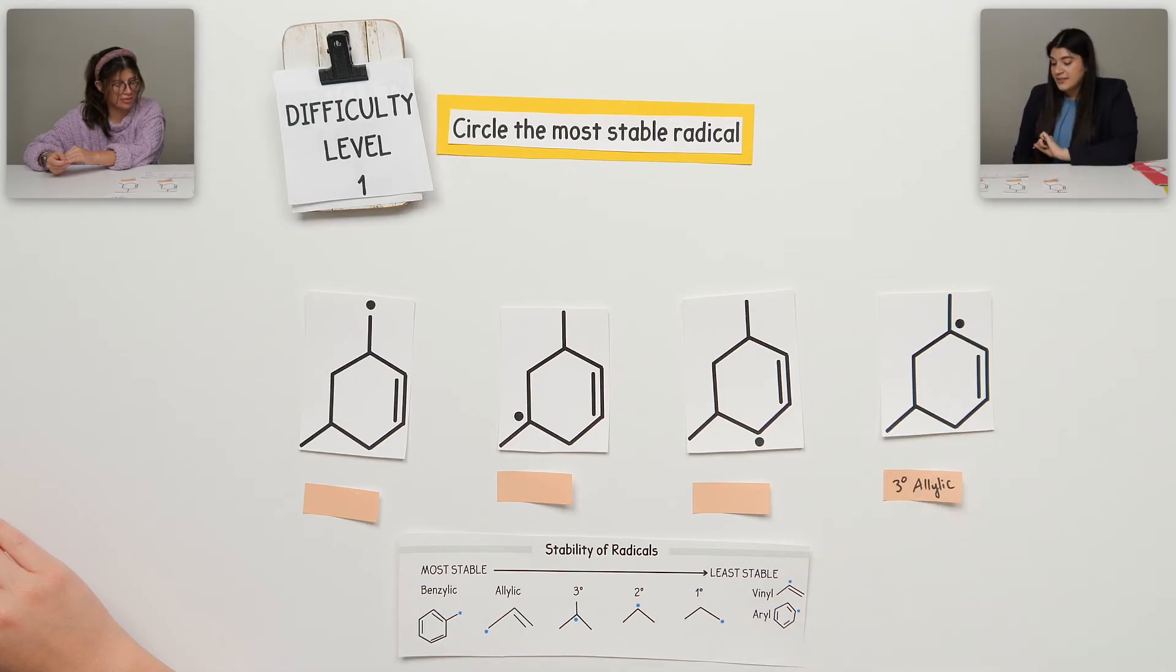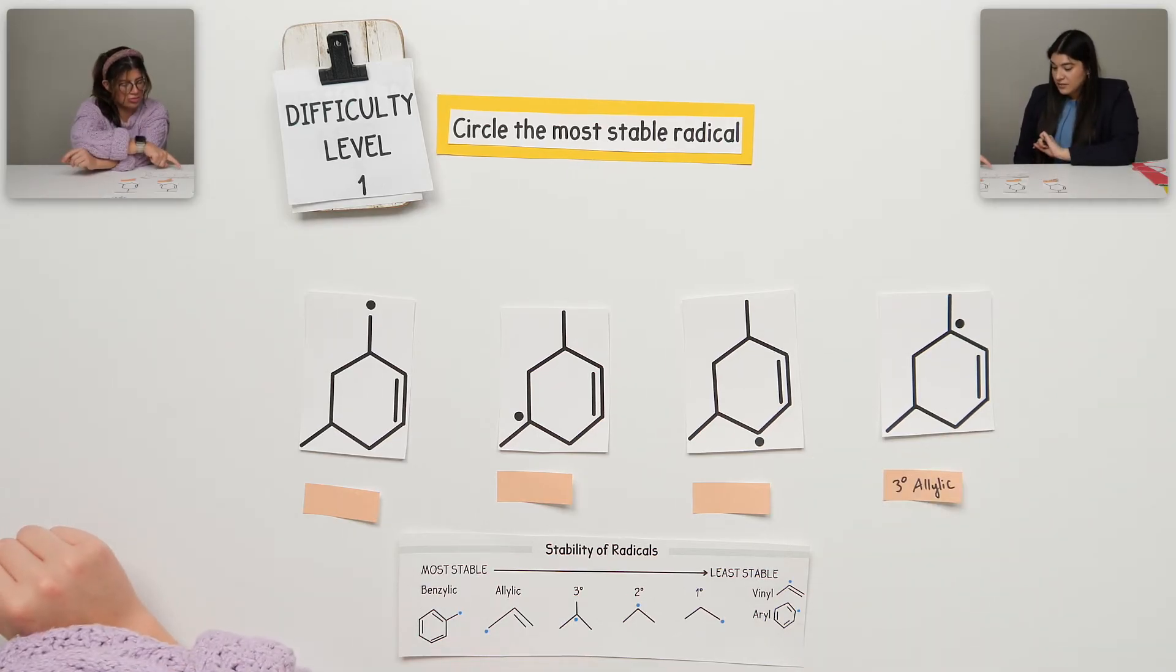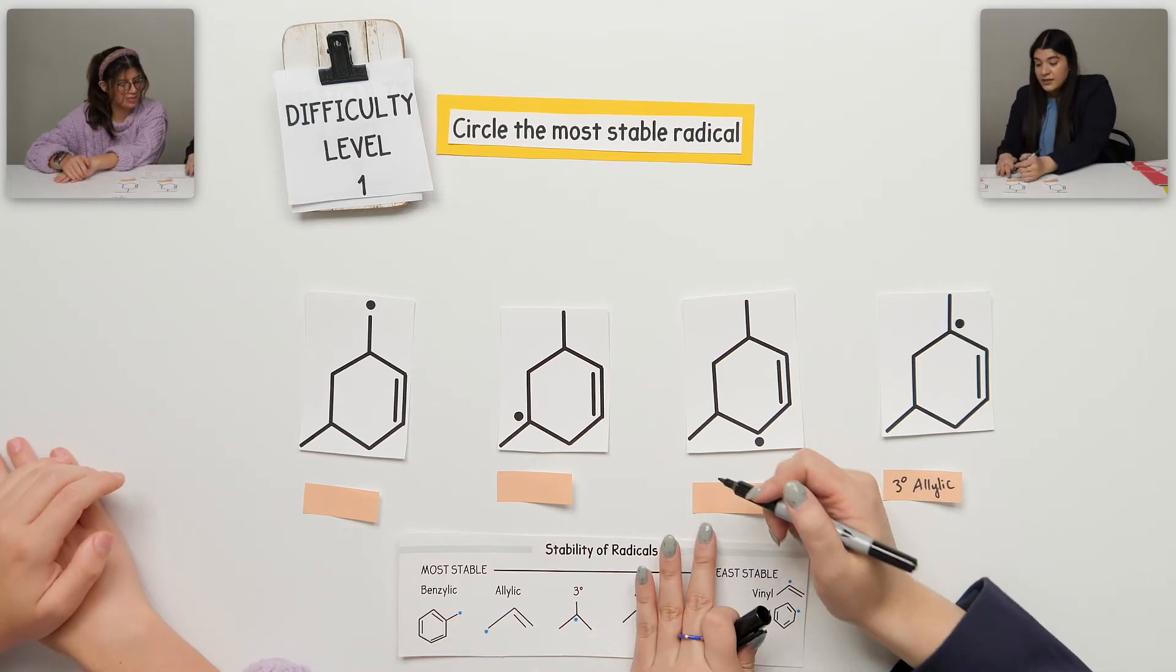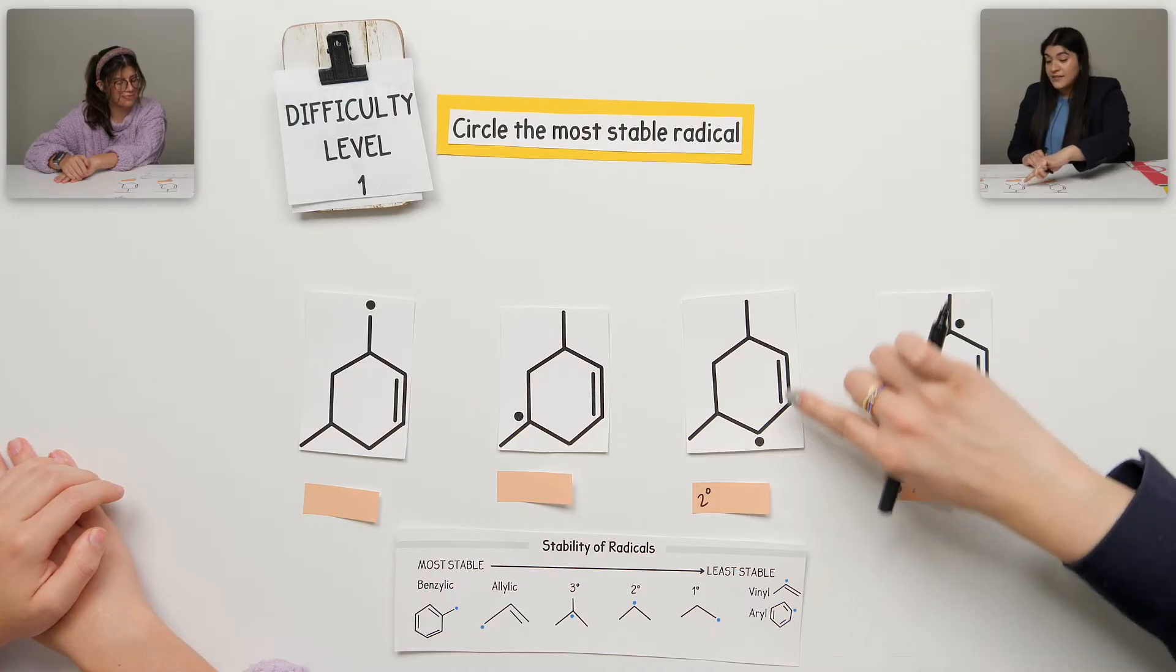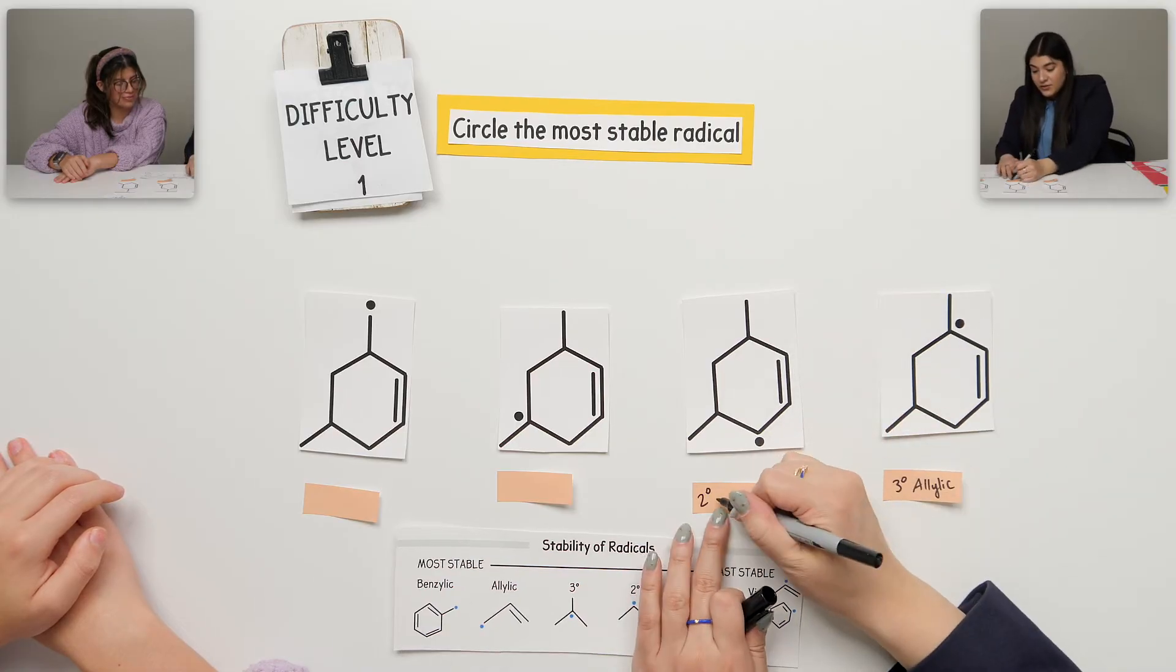And then, what would this be defined as? That would be this one right here. Secondary, good. And you also mentioned, yes, it's allylic because there's one, two, and three. That separation, yep. This is also allylic.